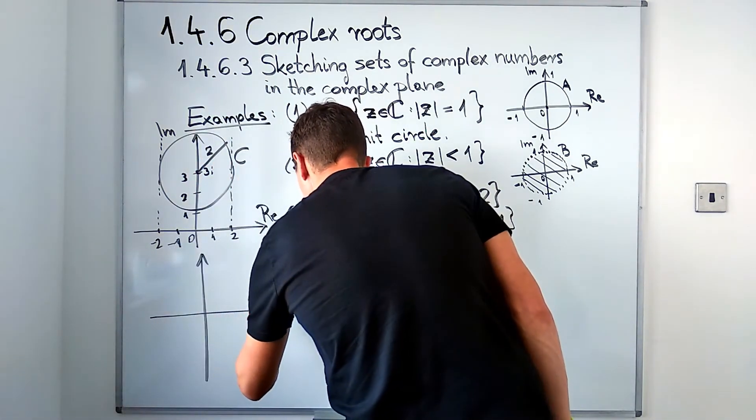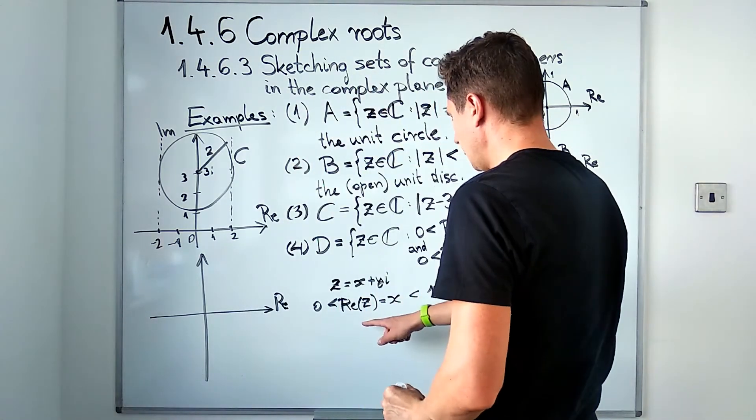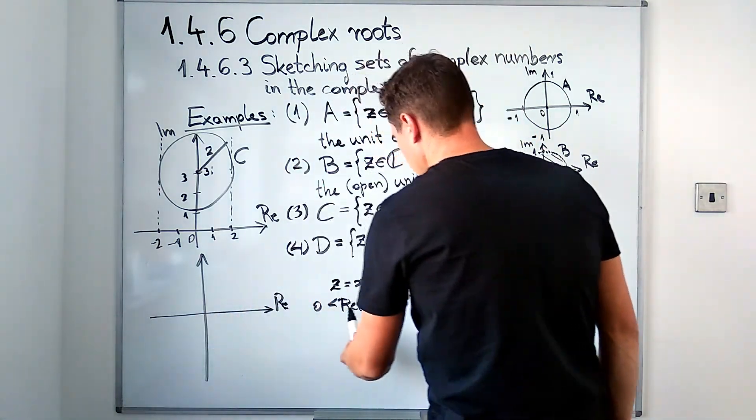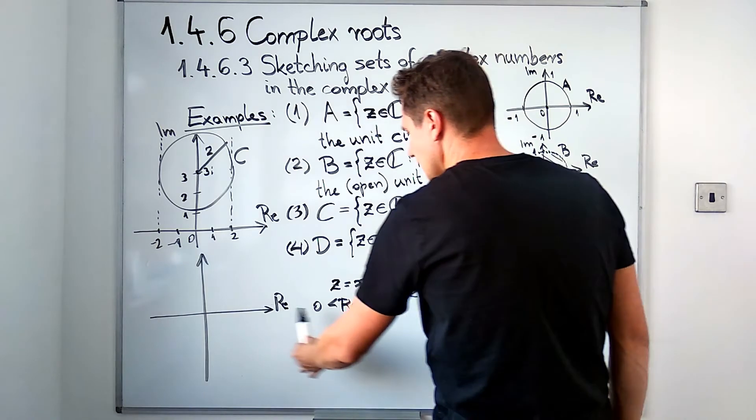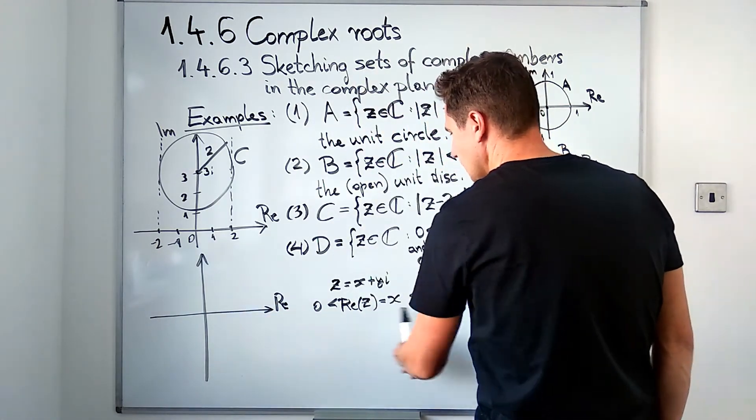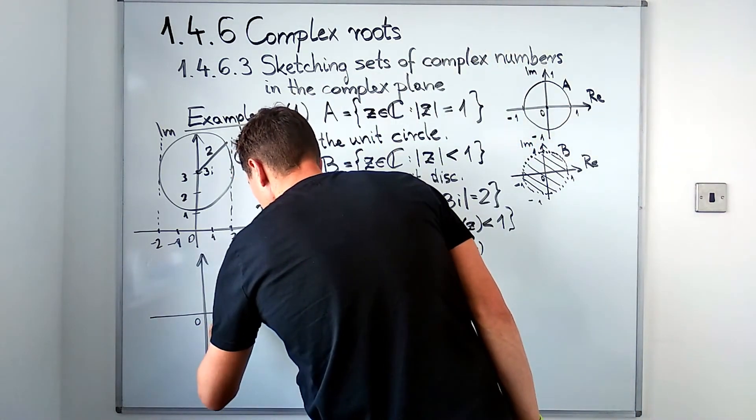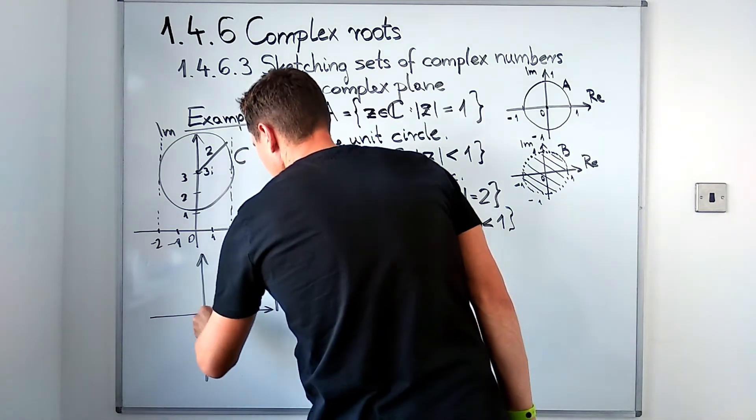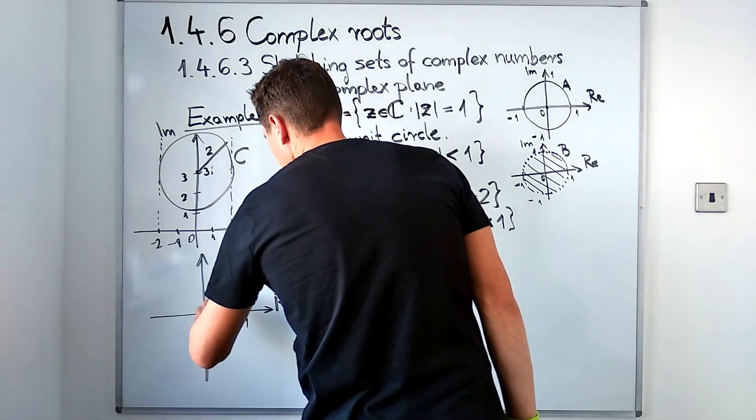What that means is now in the complex plane we should have numbers which have their horizontal coordinates between zero and one.